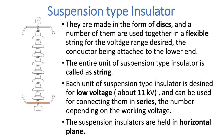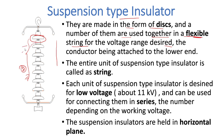The next one is the suspension type of insulator. As you can see, it is hanging. They are made in the form of a disc, and a number of them are used together. In the given figure you have eight discs in a flexible string for the voltage range desired. Flexible means you can add or remove any number of discs as needed.